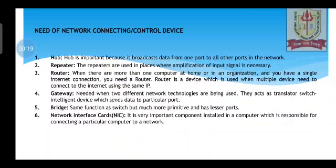So we were discussing network connecting devices. These are some of the examples of network connecting devices, starting with the hub. Hub is important because it broadcasts data from one port to all other ports in the network. Repeaters are used in places where amplification of input signal is necessary, in the sense where data energy loss takes place, so amplification should be provided.